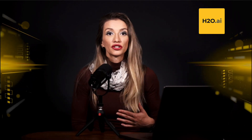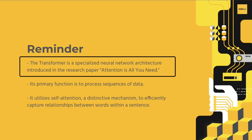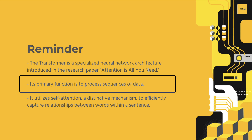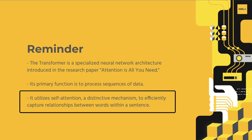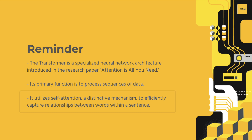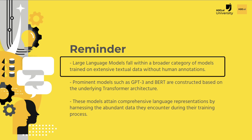Now that we've discussed the transformer architecture, let's explore its relationship with the LLM architecture and understand their distinctions. The transformer represents a specific type of neural network architecture, first introduced in the research paper 'Attention is All You Need.' Its core purpose is to process sequences of data using self-attention, a mechanism that efficiently captures relationships between words. Large language models, on the other hand, belong to a broader category of models trained on vast amounts of text data. Many renowned models, including GPT-3 and BERT, are built upon the transformer architecture.